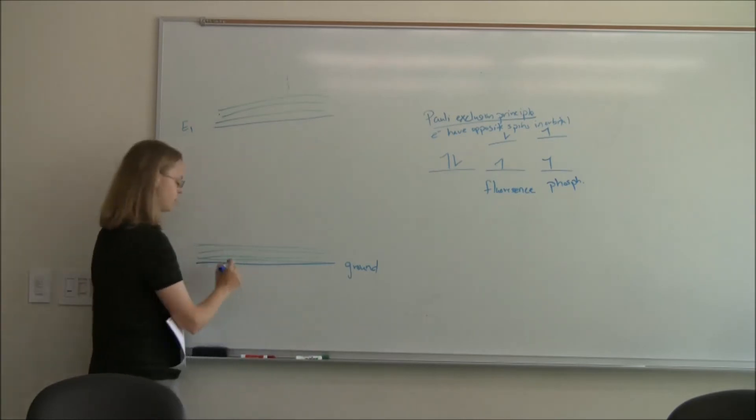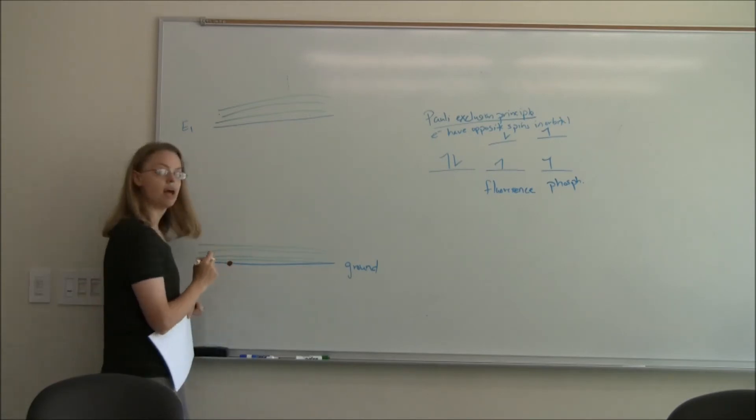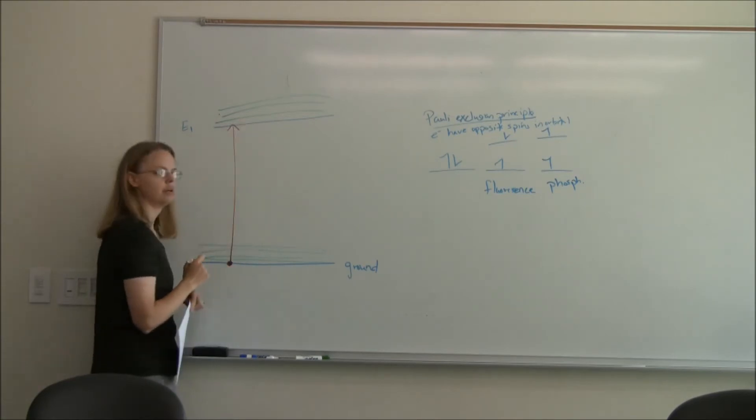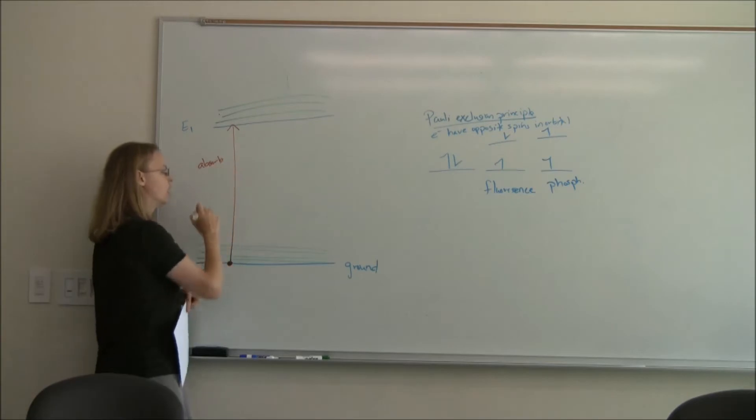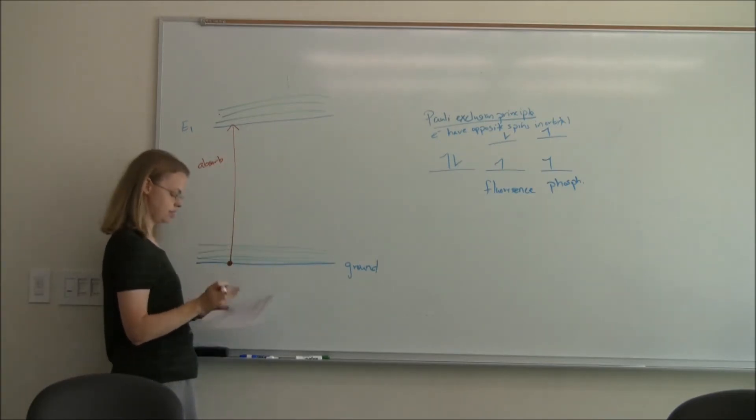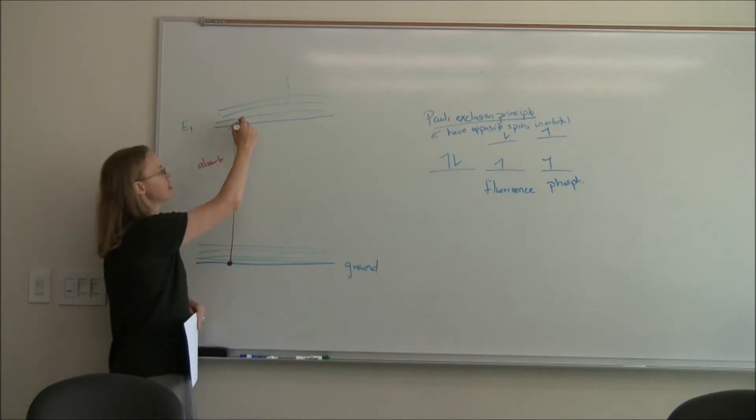We start with our molecule down here. I want to make a molecule red. We can promote the molecule up. This is the absorption of a photon. Once it's up here, it has a bunch of choices as to how to get down. If it just goes up to this E1 and then it comes straight back down and emits a photon, that would be fluorescence.